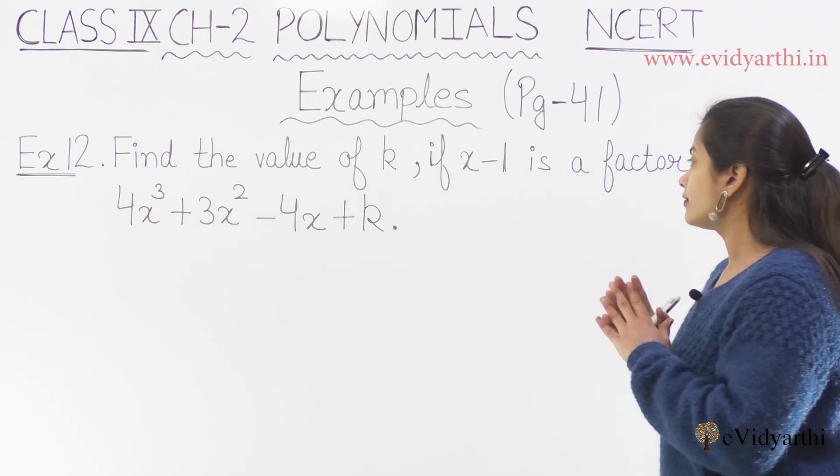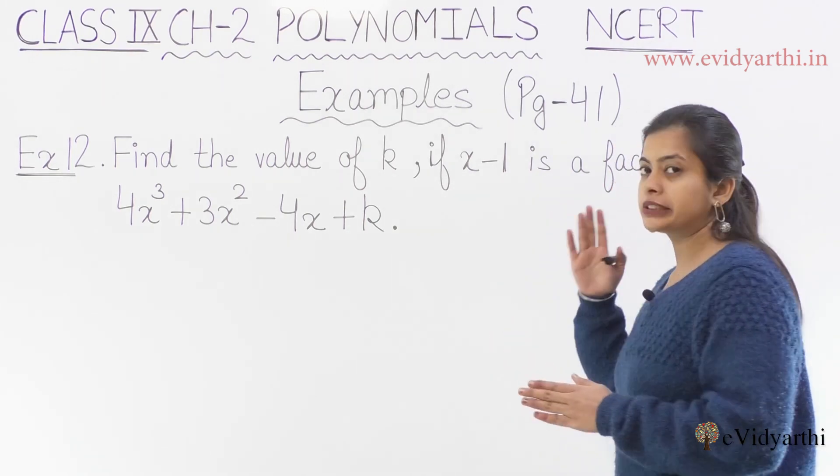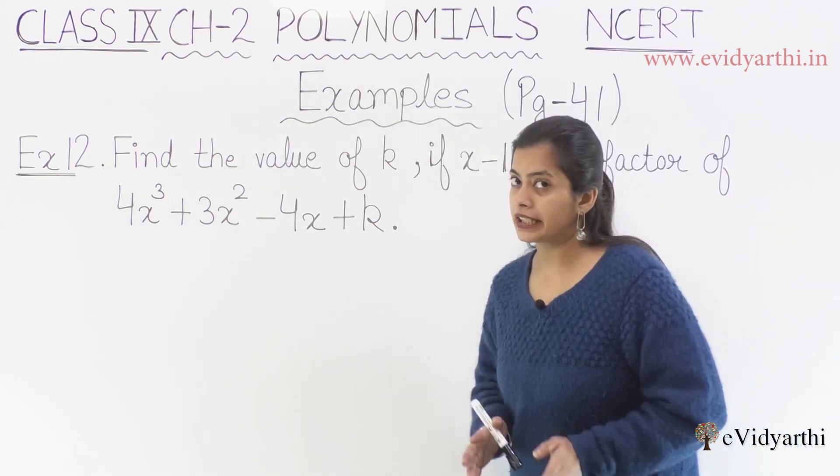Find the value of k if x-1 is a factor of 4x cubed plus 3x squared minus 4x plus k.